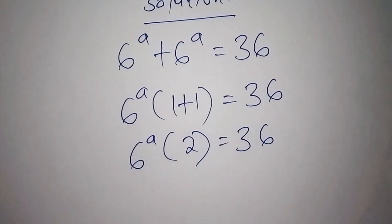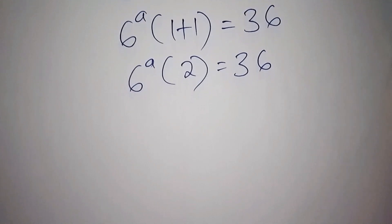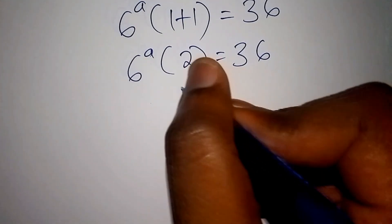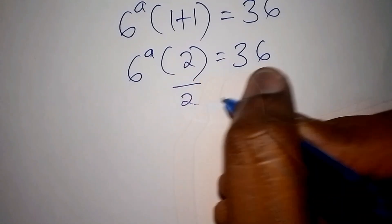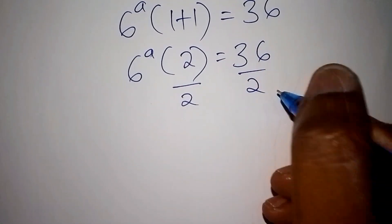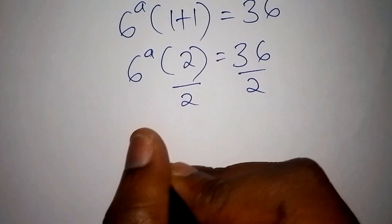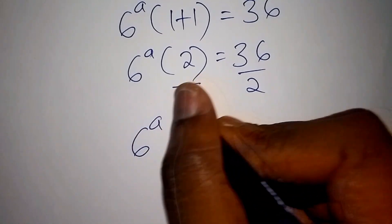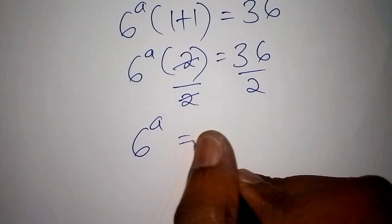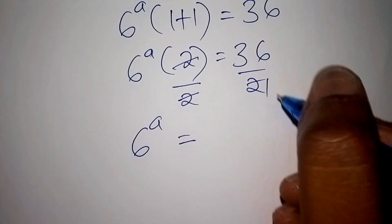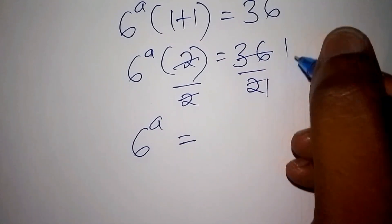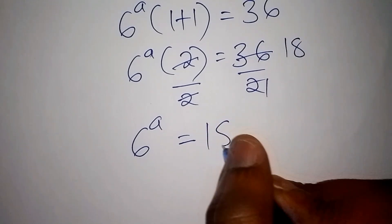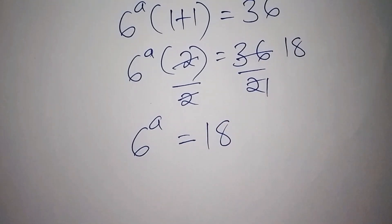Let us now divide both sides by 2. The 2s cancel, giving us 6 to the power of a is equal to 36 divided by 2, which is 18.